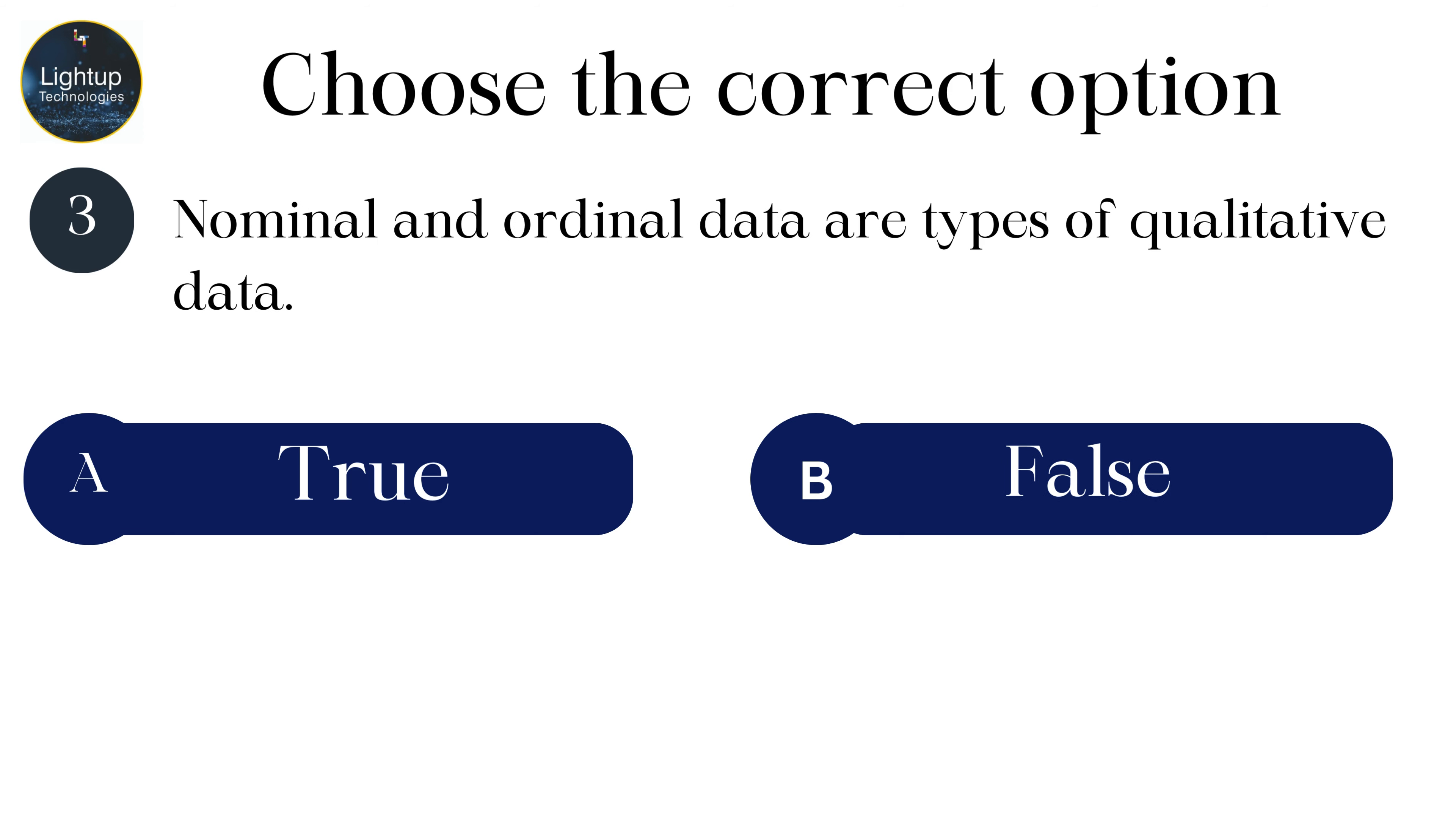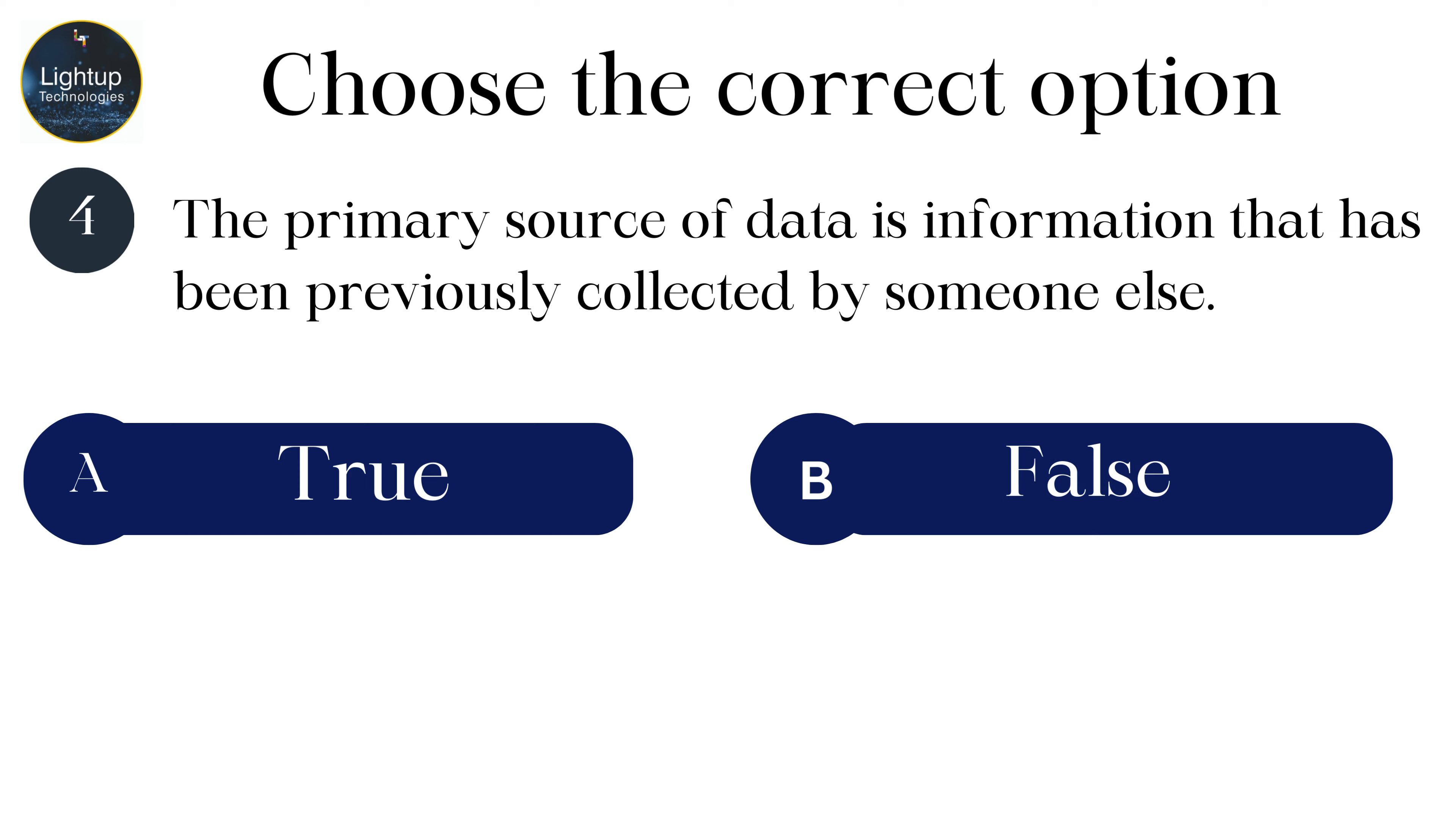Nominal and ordinal data are types of qualitative data. The primary source of data is information that has been previously collected by someone else.